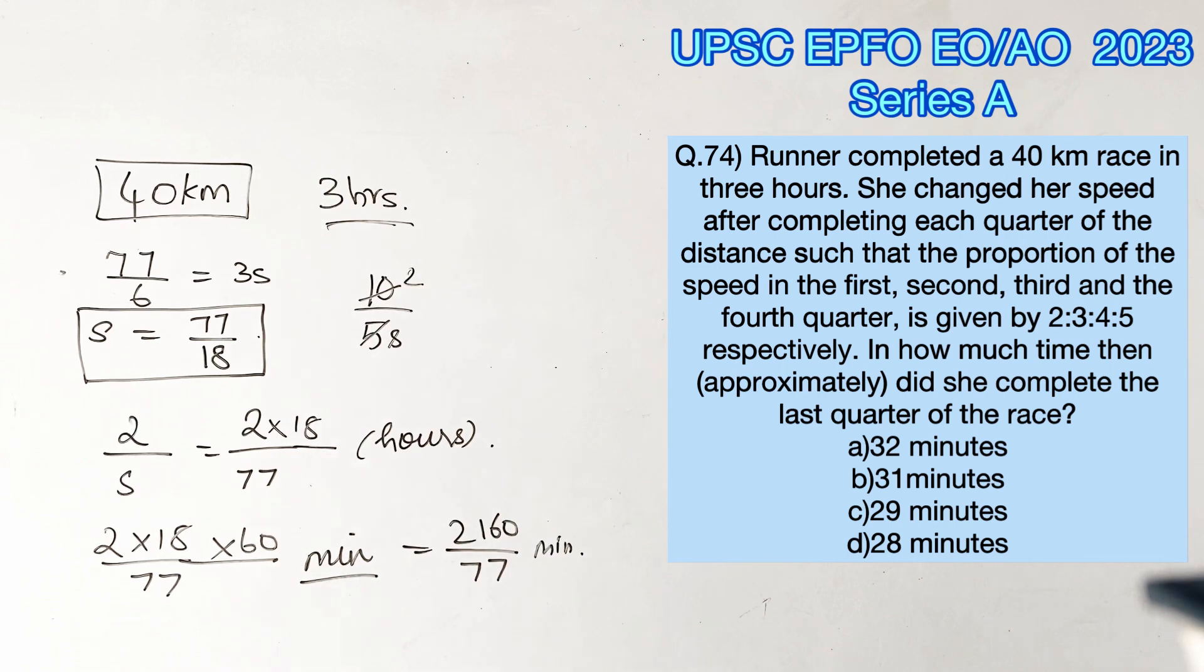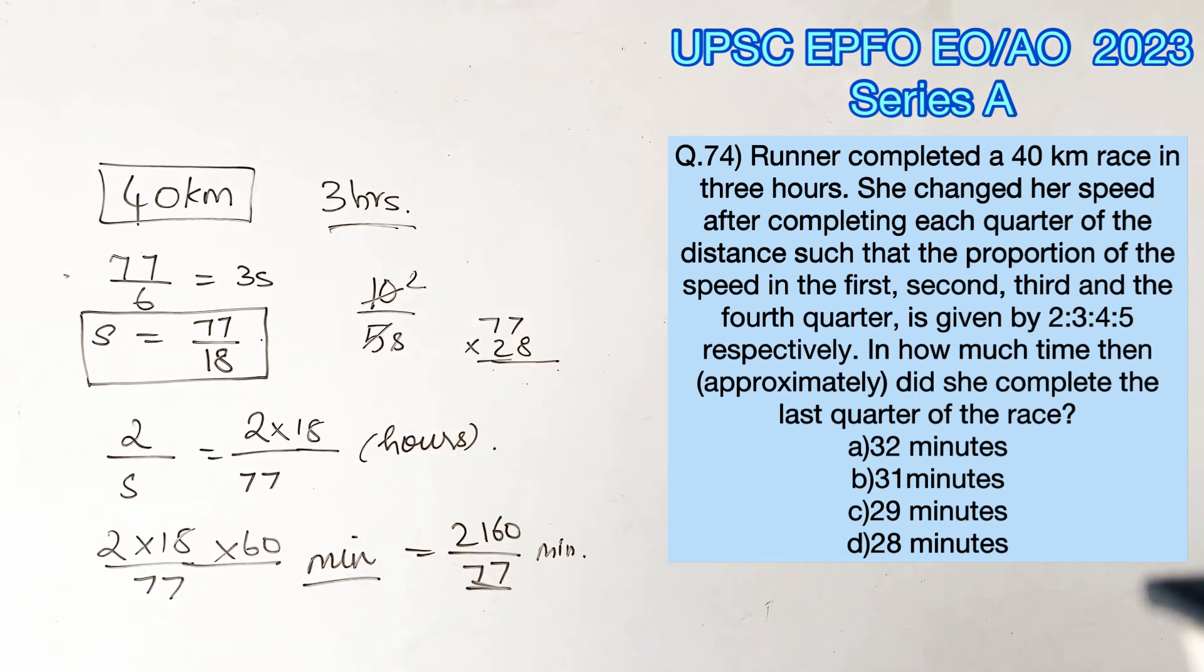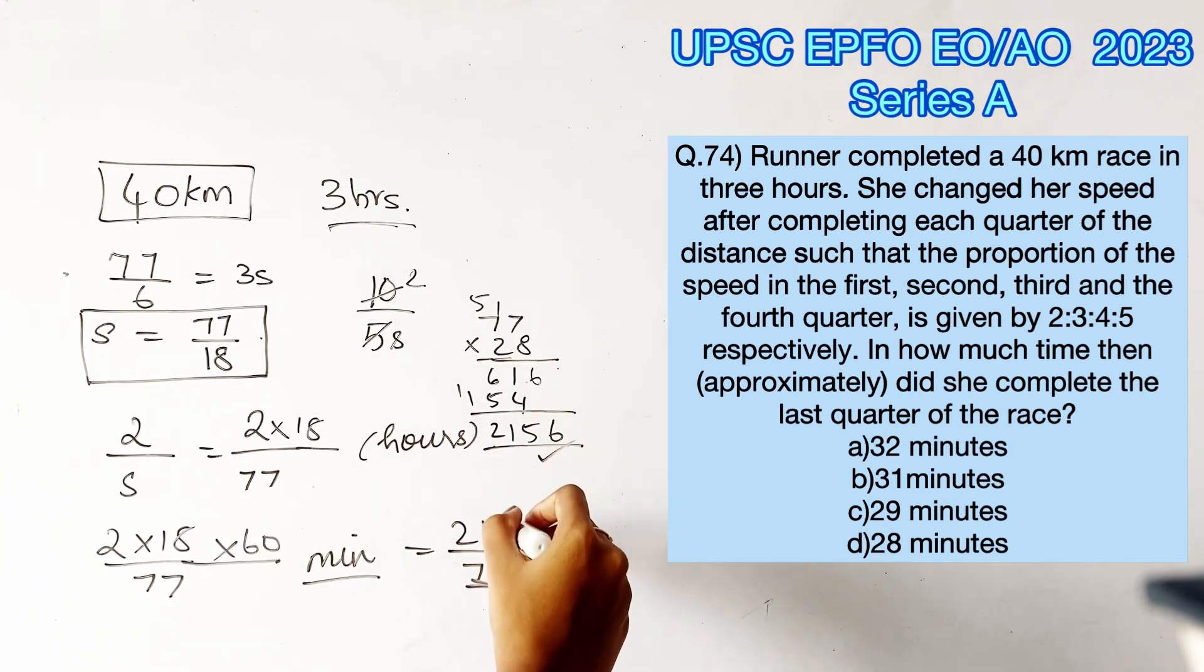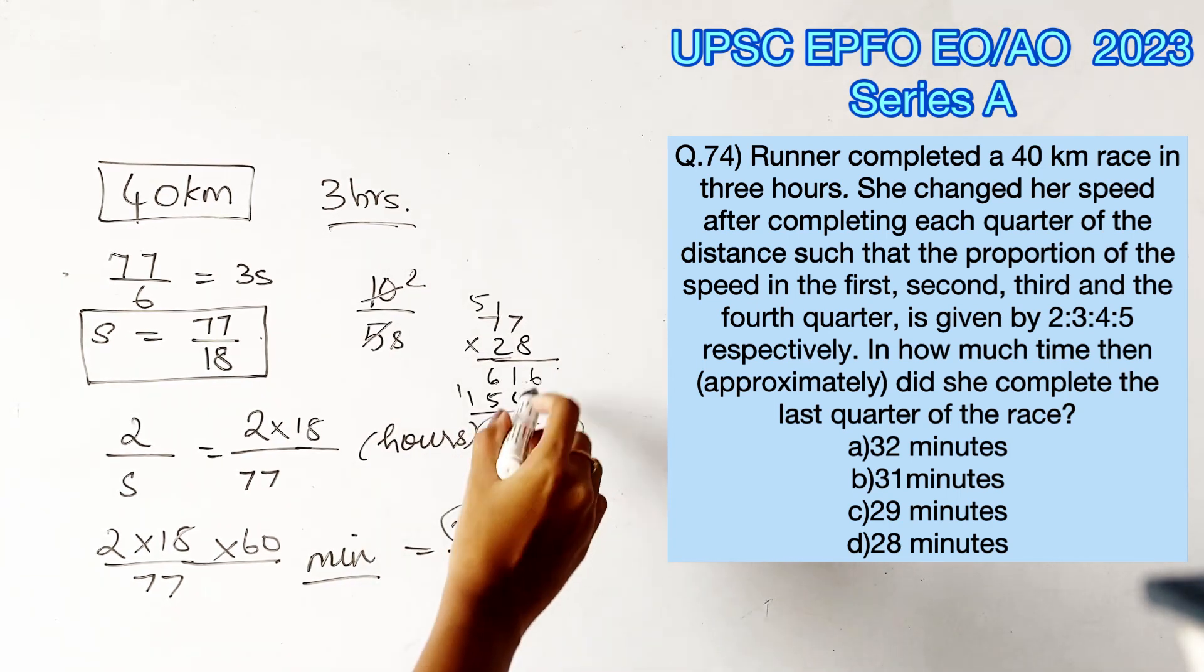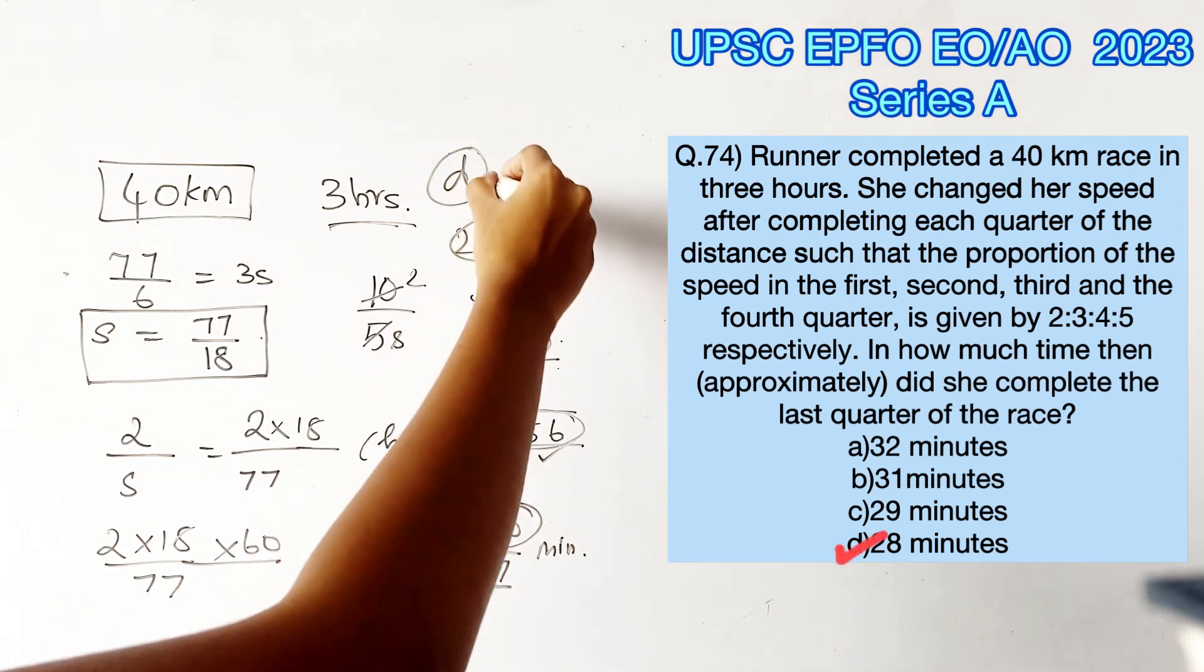So now we have to find the closest multiple of 77 to 2160. Multiplying the least value, 77 into 28, would give us 2156, which is very close to 2160. So 28 is the answer.